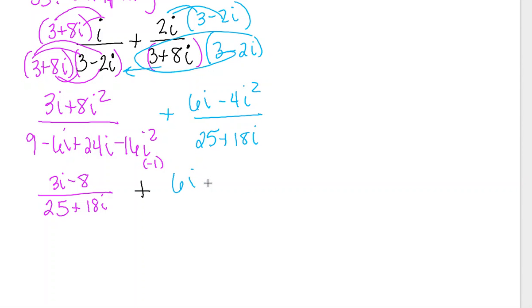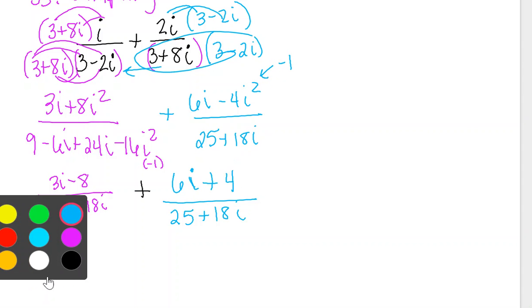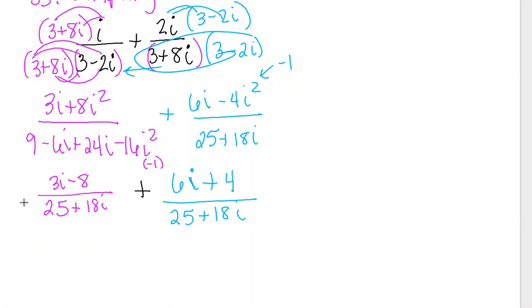So I'm just going to carry that down, except when I carry this down, I'm going to change this i squared to negative 1, so that makes it a plus 4. And then I get to add my numerators together, so I'm going to combine them and put it over my common denominator. So I end up with 9i minus 4 over 25 plus 18i.